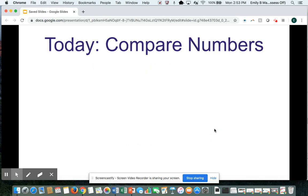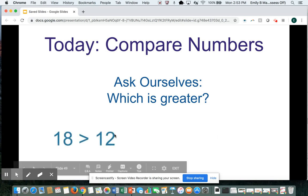We've compared numbers before, so we've asked ourselves which number is greater. For example, we've said 18 is greater than 12. We've also said 47 is less than 52. When we use these greater than and less than symbols, we are comparing numbers.